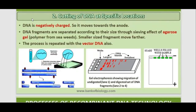DNA is negatively charged, so it moves towards the anode, which is the positively charged electrode. DNA fragments are separated according to their size through the sieving effect of the agarose gel. Smaller sized fragments move farther. This process is repeated with the vector DNA as well.